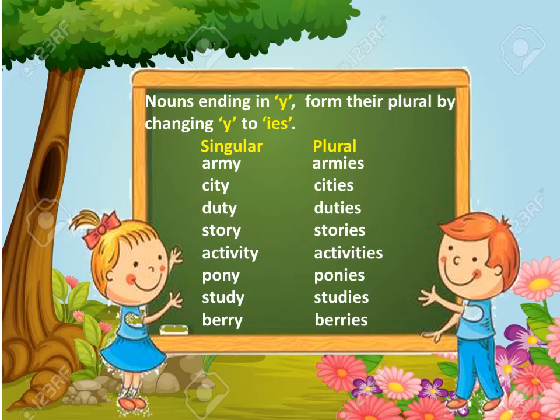Nouns ending in Y form their plural by changing Y to IES. Here are some examples: army → armies, city → cities, duty → duties, story → stories, activity → activities, pony → ponies, study → studies, bury → berries.